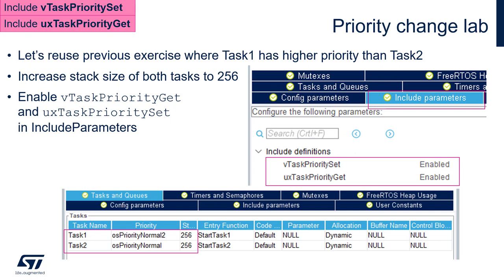We will use the previously generated code with two tasks, task 1 and task 2, and make some slight modifications. The first point is to increase the stack size of both tasks to 256, just to be sure that the new functionality we will add is handled within the specified stack size. The second important point is to enable two functions within the include parameters: vTaskPriorityGet and uxTaskPrioritySet. This should be done within the include parameters tab of the CubeMX FreeRTOS configuration. We will then generate the code for CubeIDE.